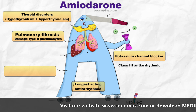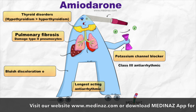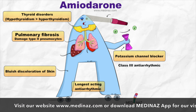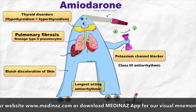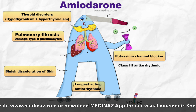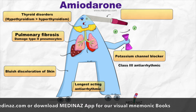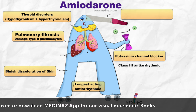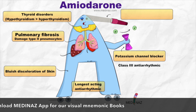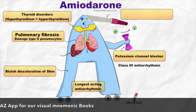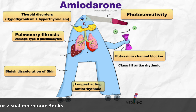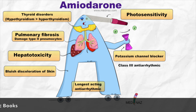One interesting side effect is bluish discoloration of skin — the blue color in the picture will help you to remember this point. The eyes are sensitive to light, representing that amiodarone can cause photosensitivity. It can also cause hepatotoxicity, myocarditis, and peripheral neuropathy.